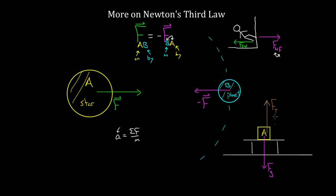These forces are canceling on box A, which tells us they are not third law partner forces, because third law partner forces are always on different objects and can never cancel. Their real partner forces are somewhere else. To find the partner force to gravity, I should call it precisely the force on object A exerted by the Earth. Now reversing the labels: there's got to be an equal and opposite force, which is the force on the Earth by box A — an upward force exerted on the Earth by box A.